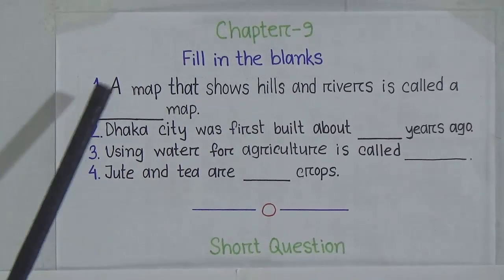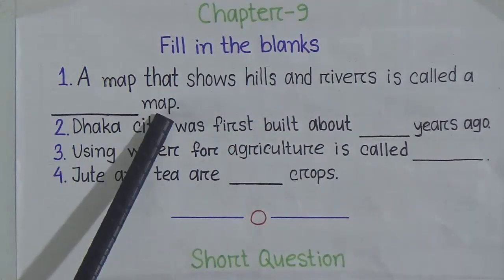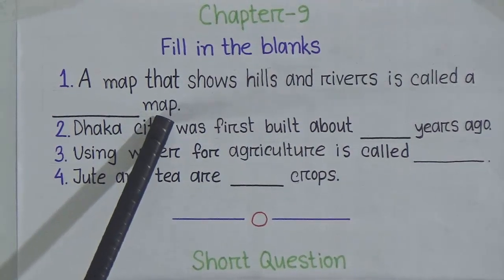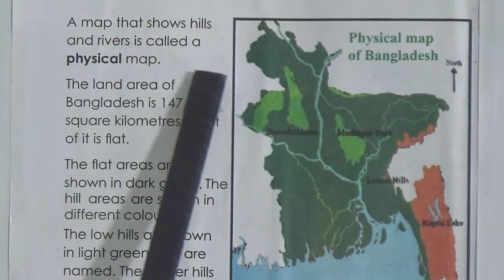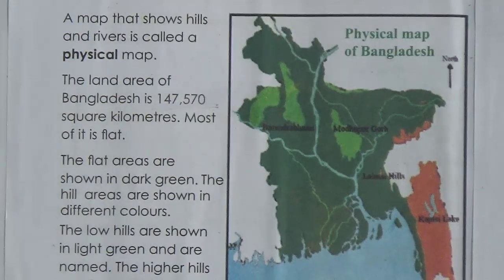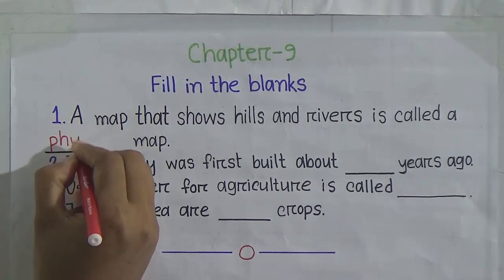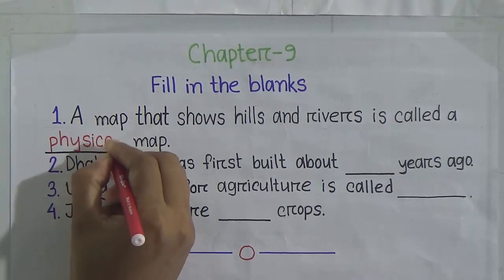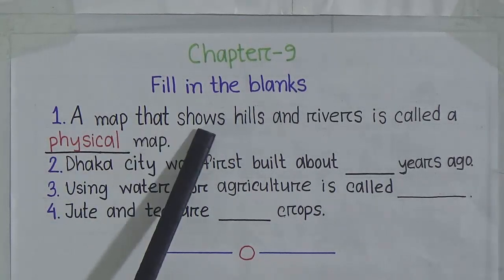First we'll do fill in the blanks from chapter 9. Our first gap is: 'A map that shows hills and rivers is called a ___ map.' Students, go to page number 52, lesson 2. A map that shows hills and rivers is called a physical map. So in the gap we have to write 'physical' — P-H-Y-S-I-C-A-L. The sentence is: a map that shows hills and rivers is called a physical map.